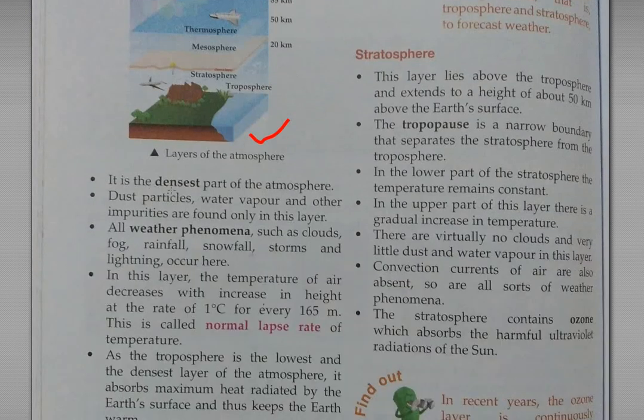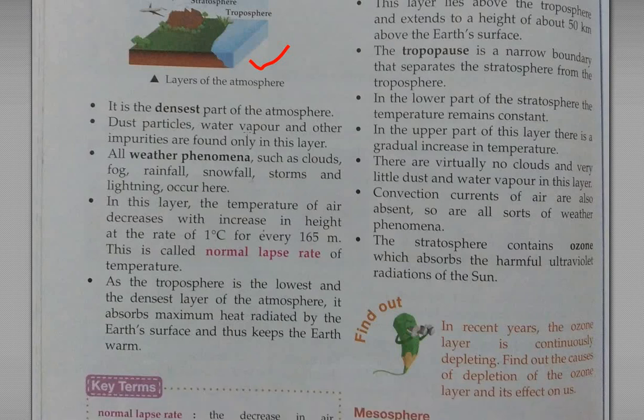The Troposphere is the densest part of the atmosphere. Dust particles, water vapor, and other impurities are found only in this layer. Weather phenomena such as clouds, fog, rainfall, snowfall, storms, and lightning occur here.